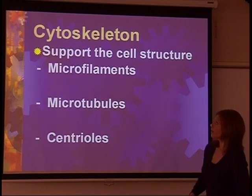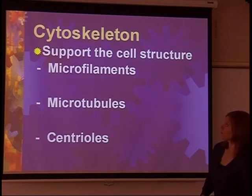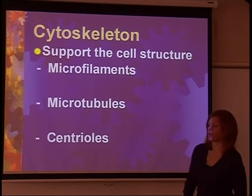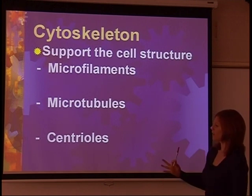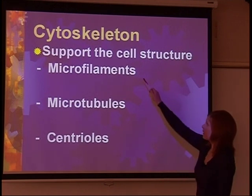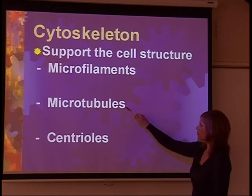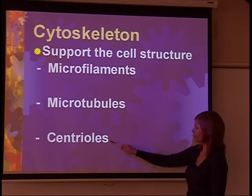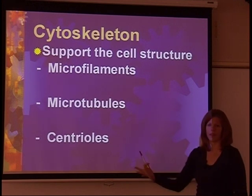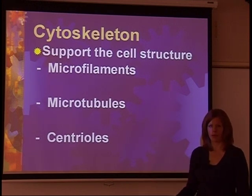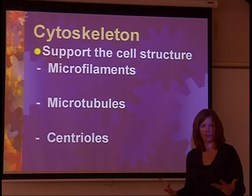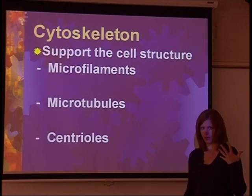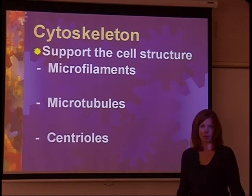The cytoskeleton of the cell really offers structure and support to the cell, and we have three main structures that do this: there's microfilaments, microtubules, and centrioles. They work together to give the cell some kind of support, just like your skeleton gives your body support.